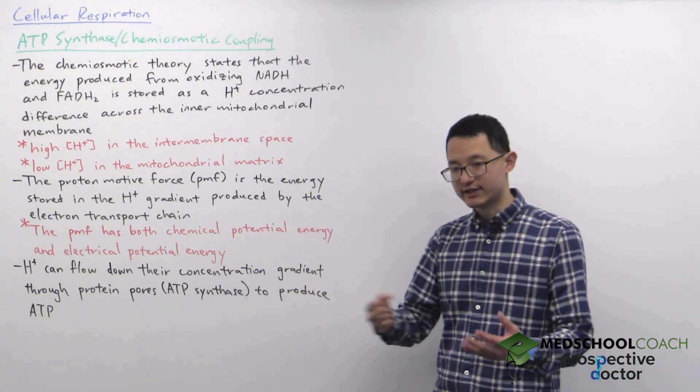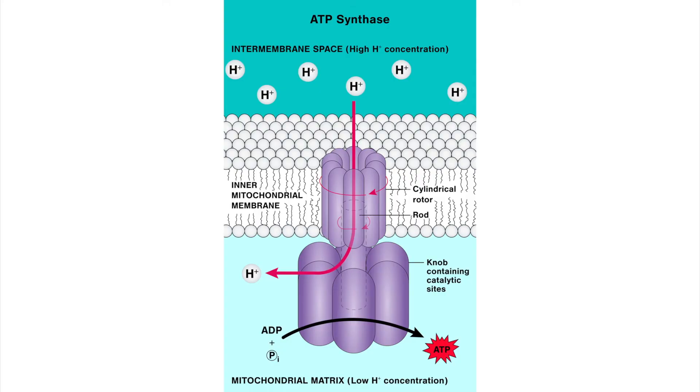So what happens, and as you can see in this diagram, is that with this proton concentration difference it's possible for protons to flow down their concentration gradient from the intermembrane space and into the mitochondrial matrix by passing through special protein pores called ATP synthase.